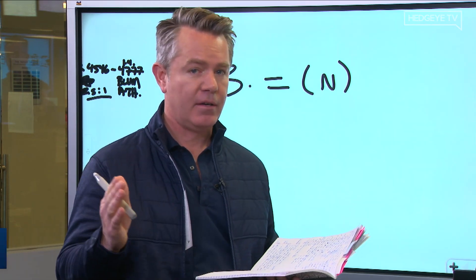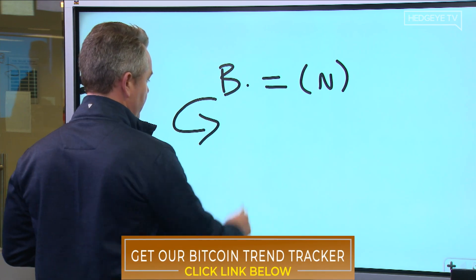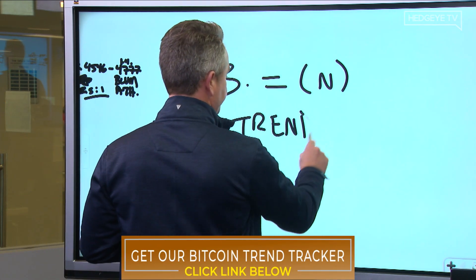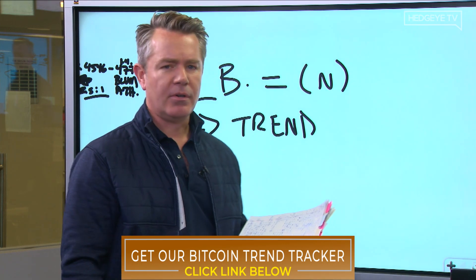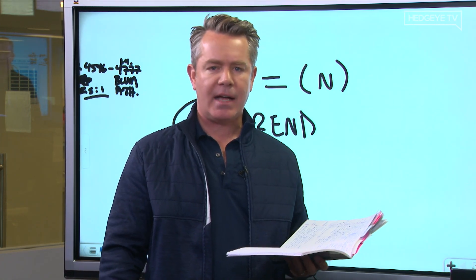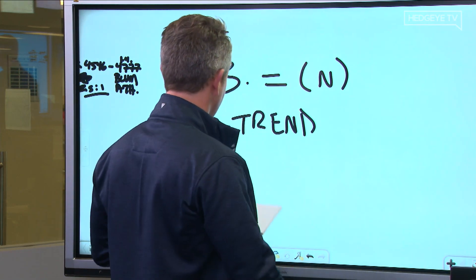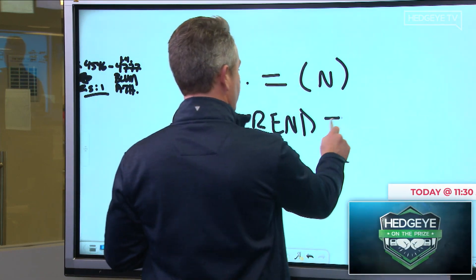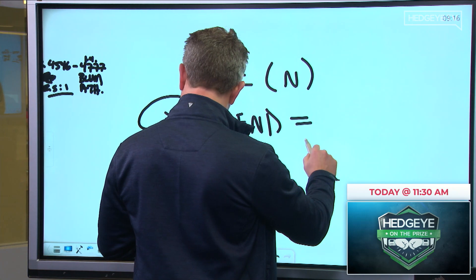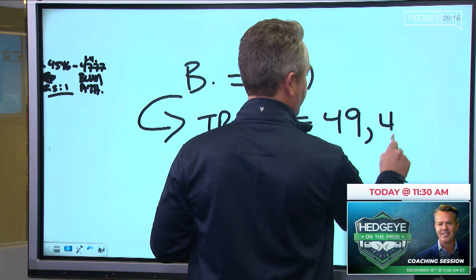So bitcoin trend level — trend equals... I don't have to write a white paper or sell a bunch of TV marketing ads or get a bunch of maxis on here to tell me what to do. It's just math. Trend equals — wait on it — 49,432.